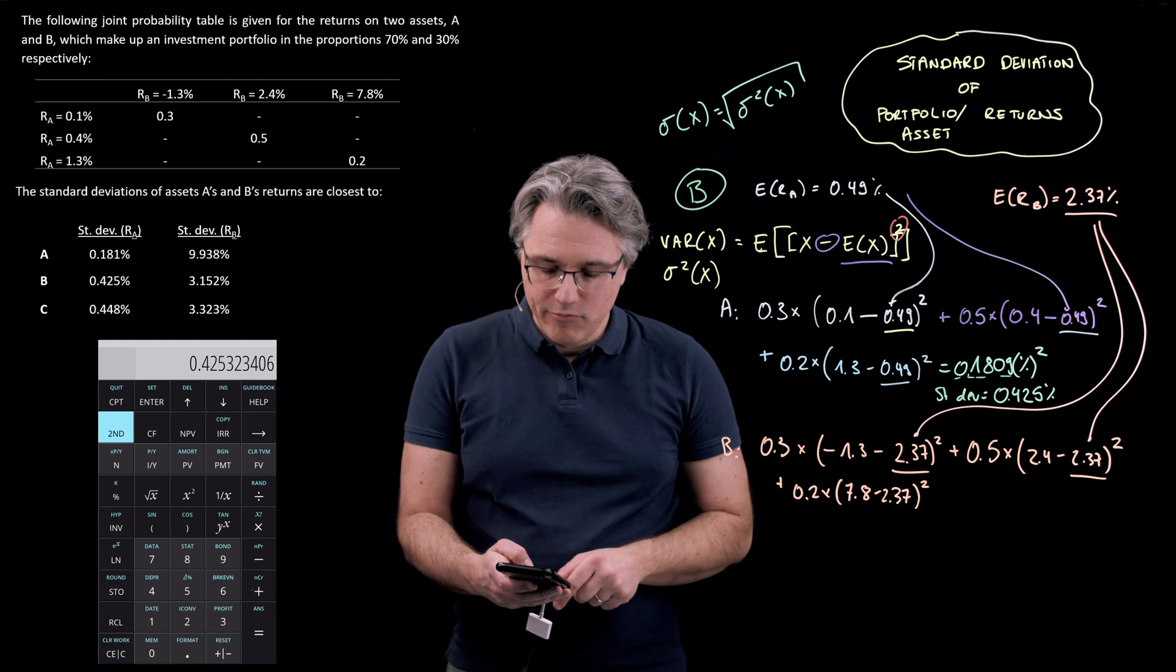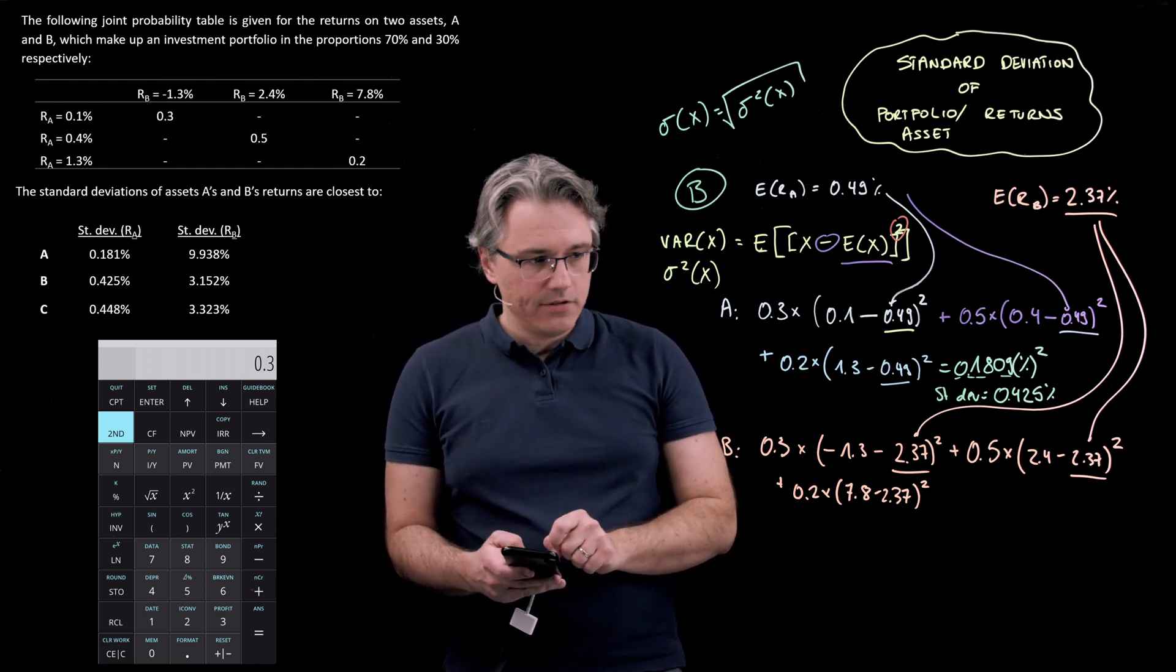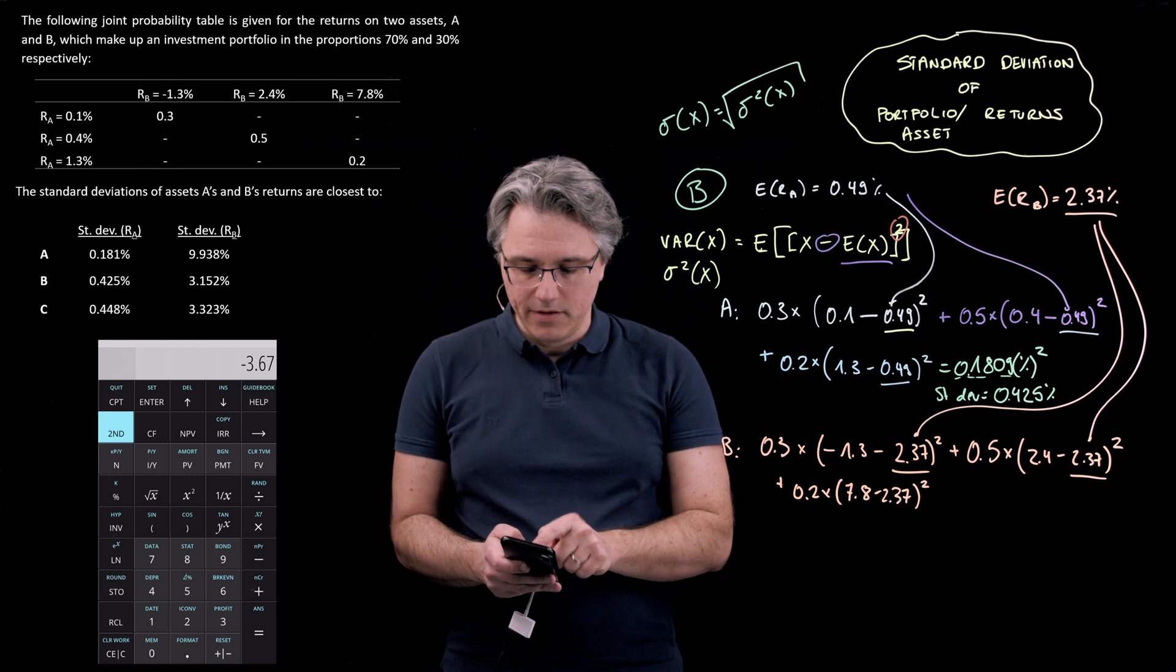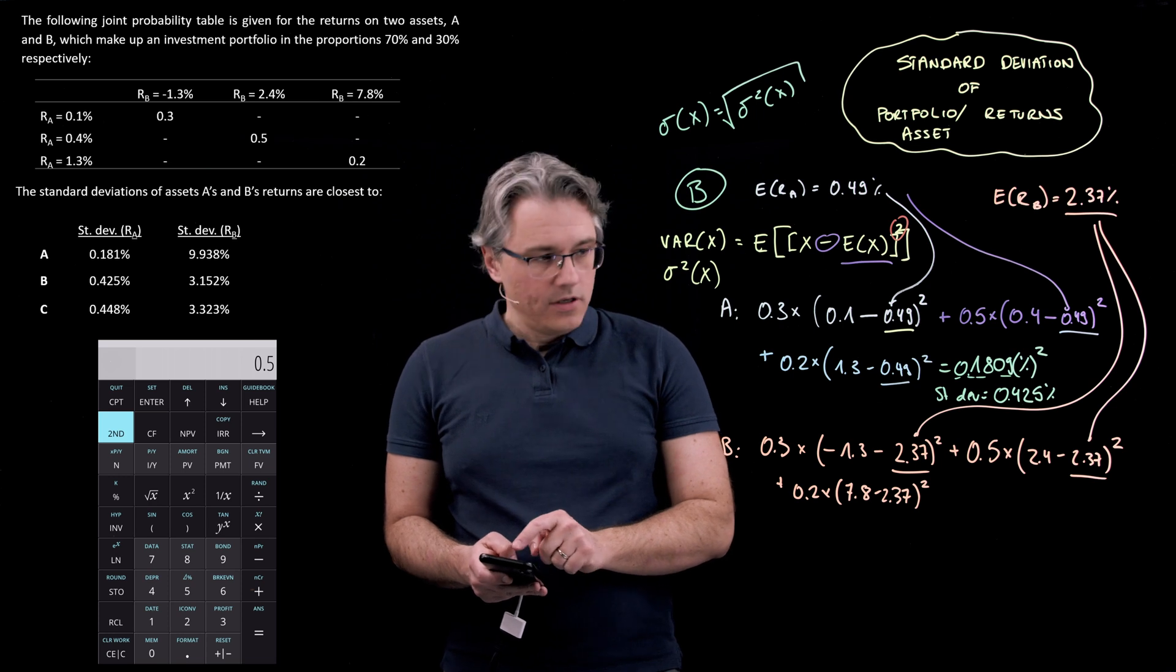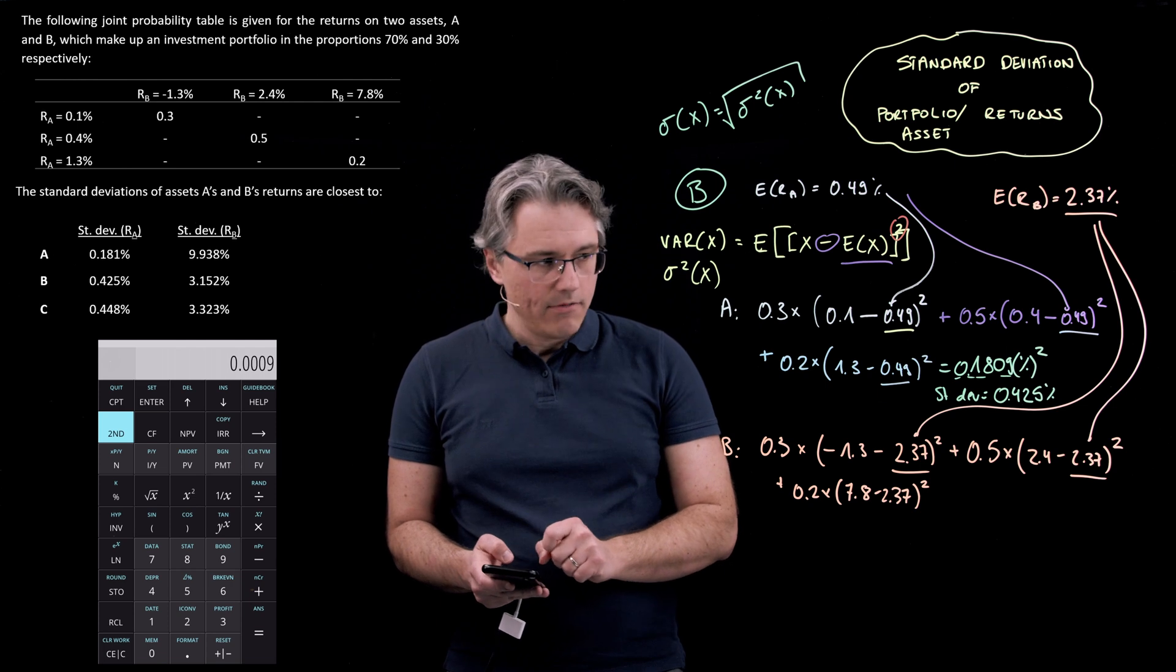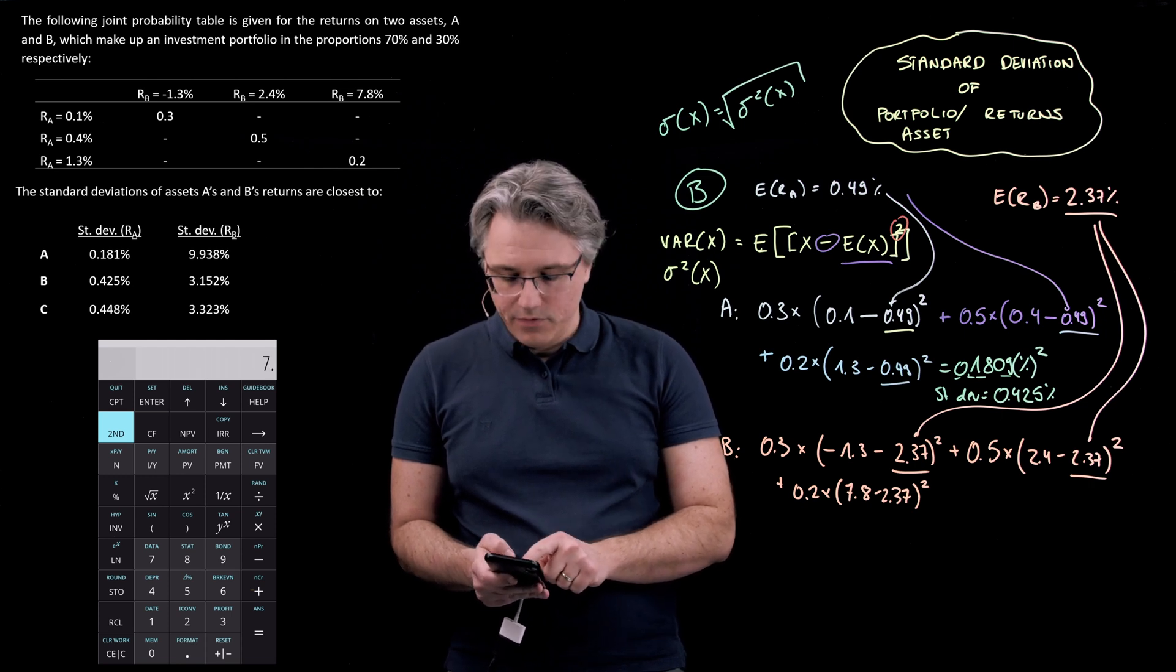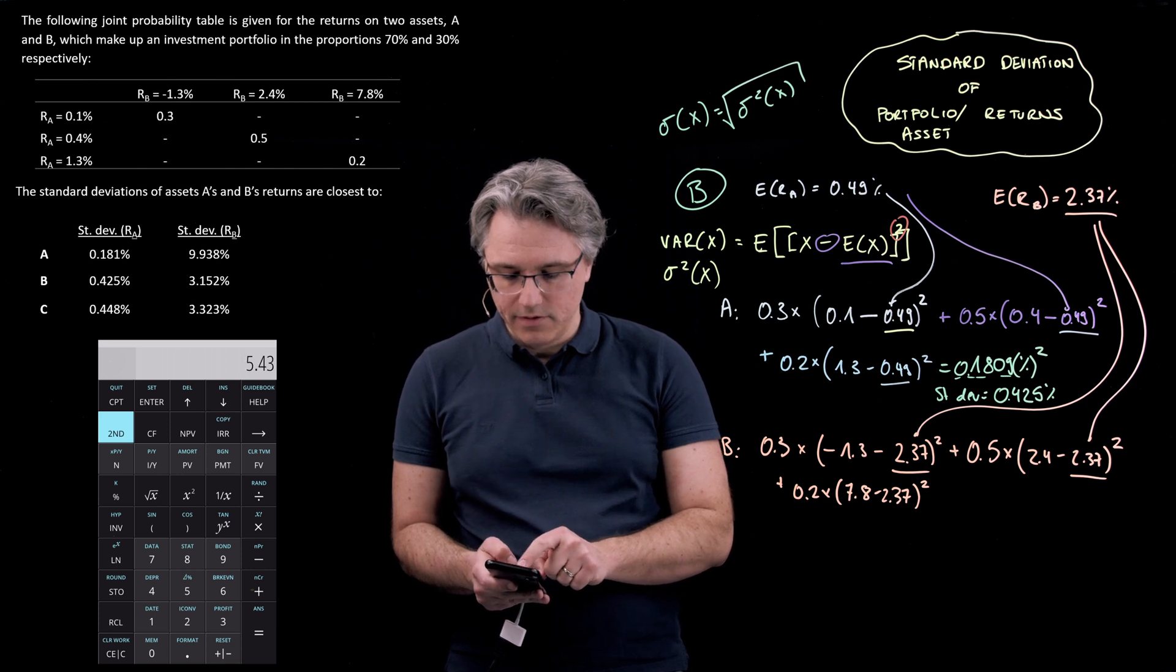Let's now quickly do the relevant computations for asset B. 0.3 times open bracket 1.3 make it negative minus 2.37 close bracket square, plus 0.5 times open bracket 2.4 minus 2.37 close bracket square it, equals.